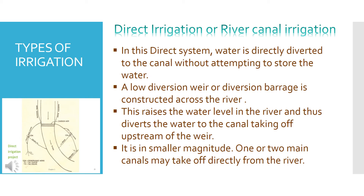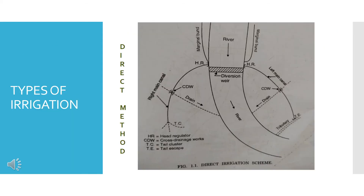The canals take off from the upstream side of the river. For smaller magnitude rivers, one or two main canals may take off directly from the river. These main canals are constructed with continuous distributor canals provided. This is the graphical representation of the direct irrigation scheme.